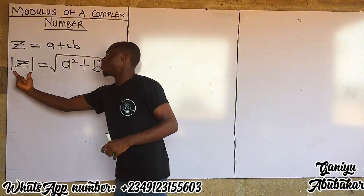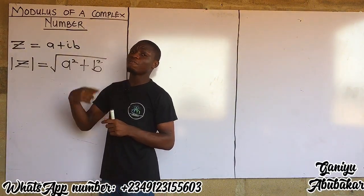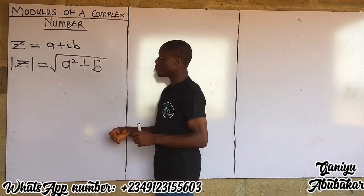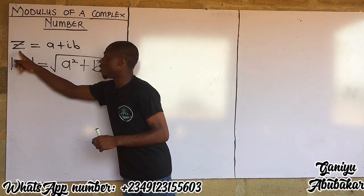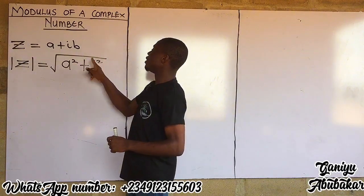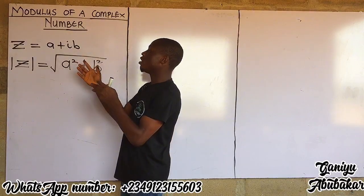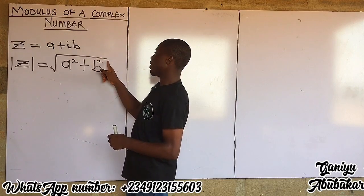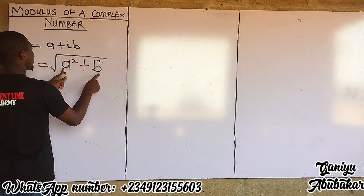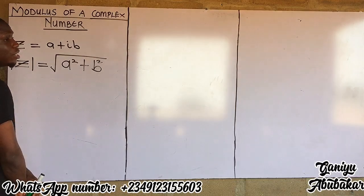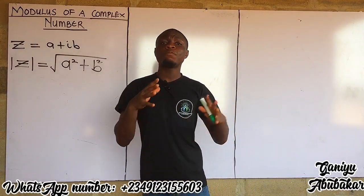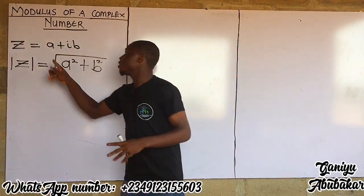So if I'm given a complex number and I'm going to find its modulus, it's not equal to a squared plus b squared directly — rather, a and b are the real numbers you pick out. Note that i is the imaginary number where i² equals negative one. To find the modulus, simply take the real numbers a and b, square them, and sum them up under the square root.